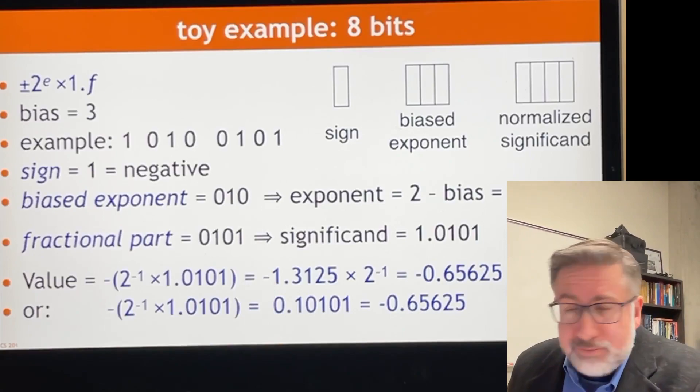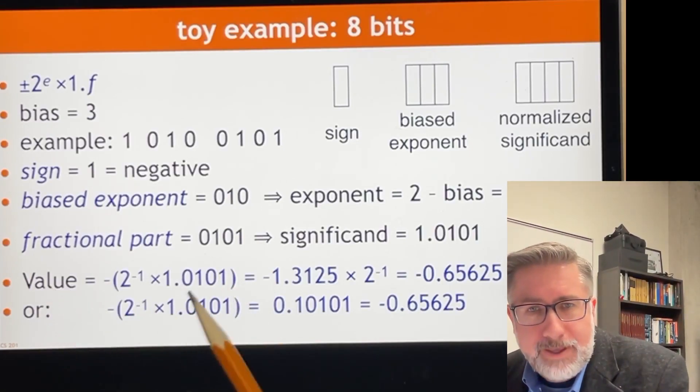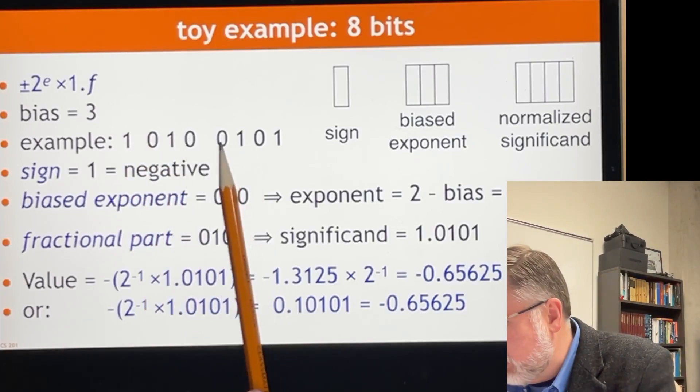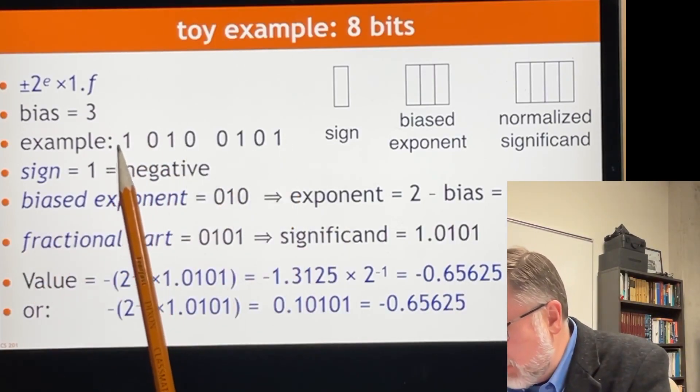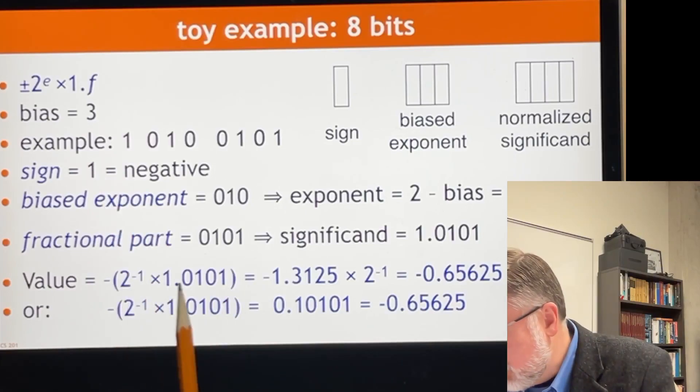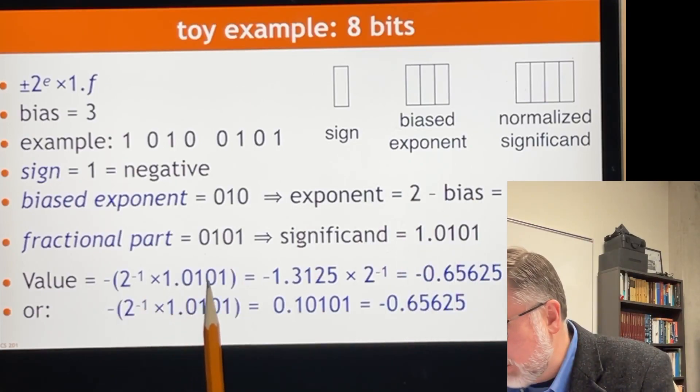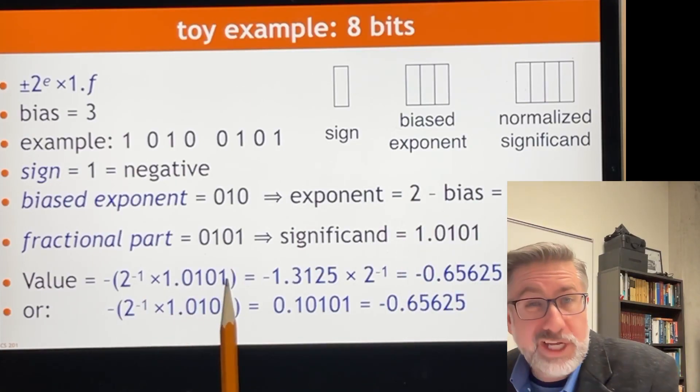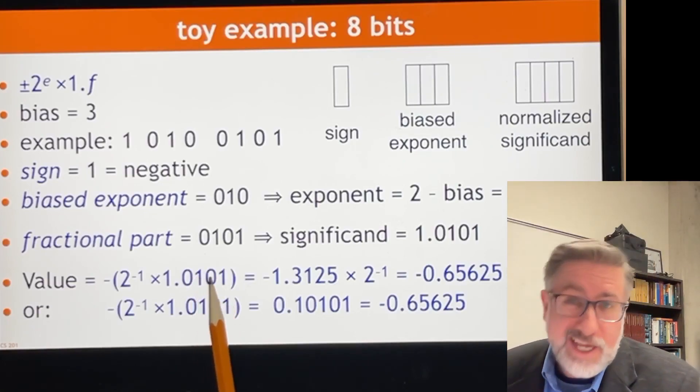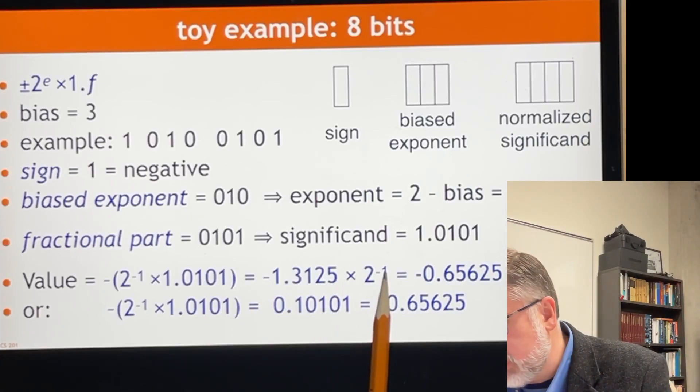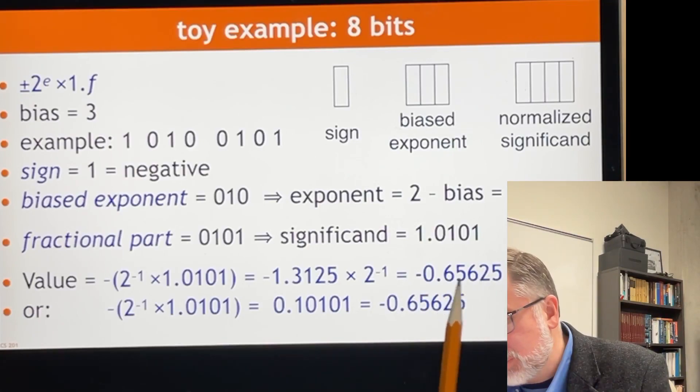So in this example, just finish this example up. What we've got is a number, 10100101, which corresponds to negative 2 to the 1. Sorry, 2 to the negative 1, right? Which comes from our bias here, times 1.0101. Which, if we convert now to base 10, is negative 1.3125 times 2 to the negative 1 is negative 0.65625.